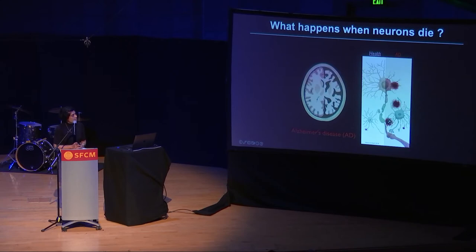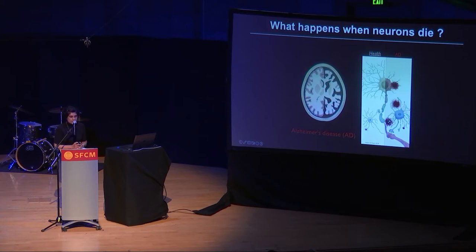Much of what happens to our brain rhythms when neurons die, we've learned from patients with Alzheimer's disease, where neurons die and neural circuits become degenerate. What we found was that in patients with Alzheimer's disease, neuronal synchrony becomes either too low or too high, and in specific brain regions.